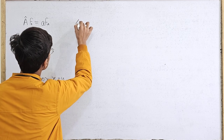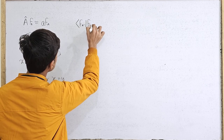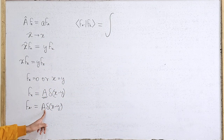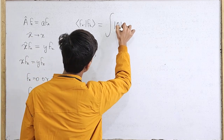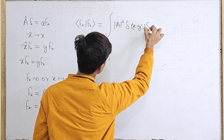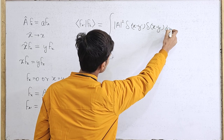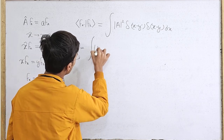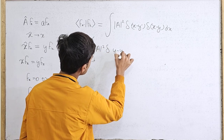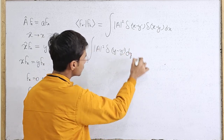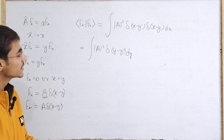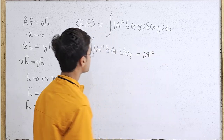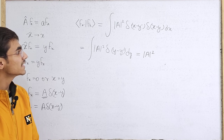The inner product of f_{x'} and f_x is equal to the integral of |a|² · delta(x minus y') · delta(x minus y) dx. Using the properties of Dirac delta functions, this becomes the integral of |a|² · delta(y minus y') dy, after a change of integration variable. This is only equal to |a|² since that constant can be taken outside the integral.